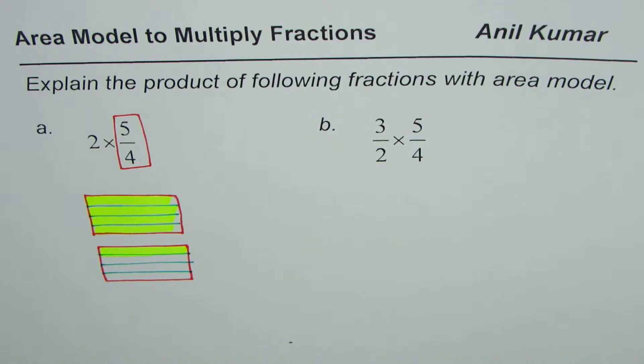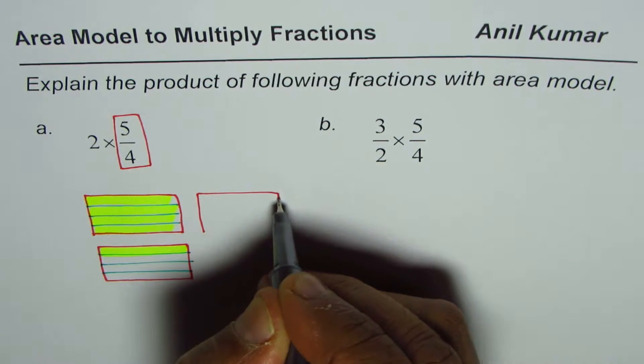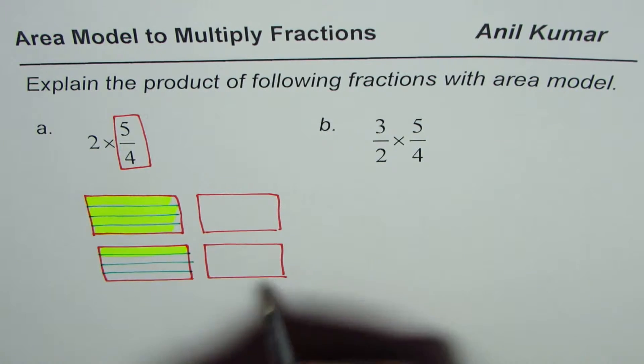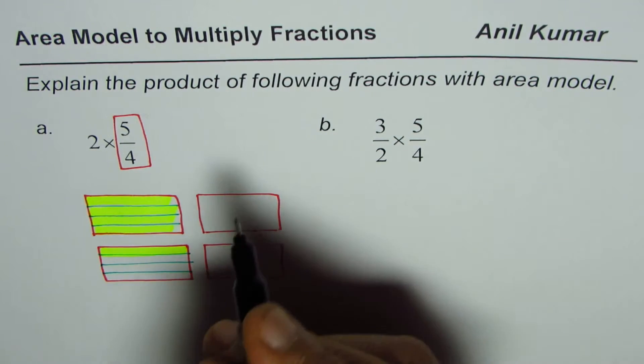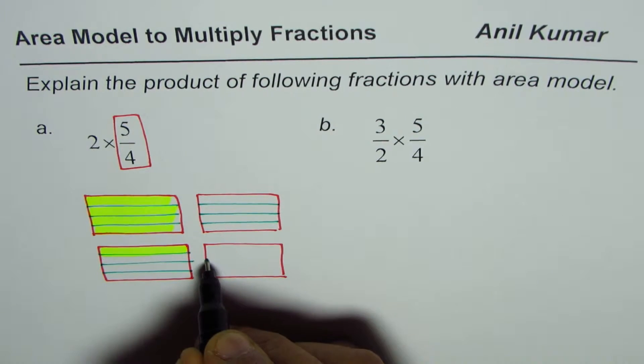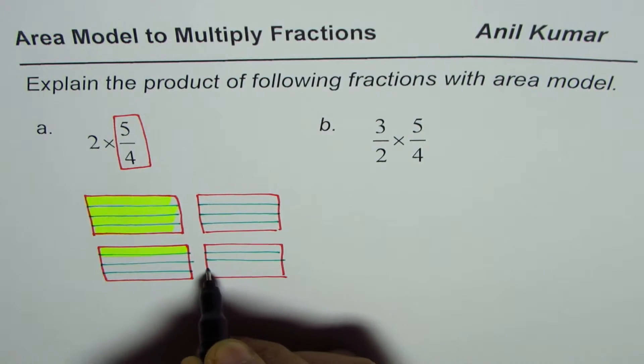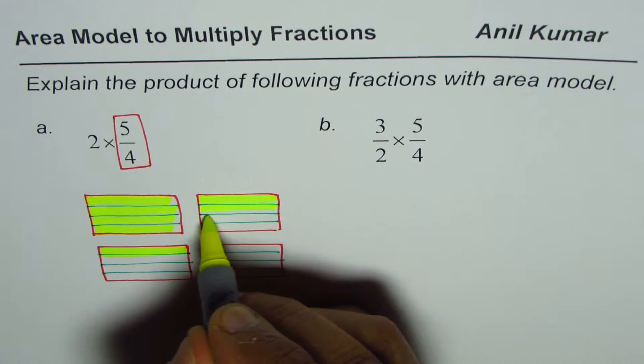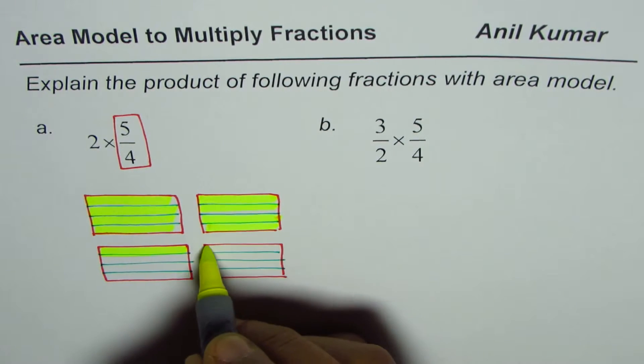Now the question is, we have to represent 2 times 5 over 4. So 2 times 5 over 4 means we have to copy it once again. So I'll copy it once again. Think they're exactly the same. Let me again divide them into 4 equal parts as we did last time, and then shade 5 of them. So that is 2 times 5 over 4.